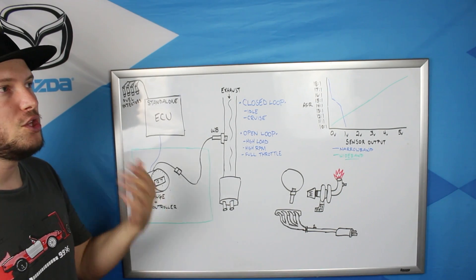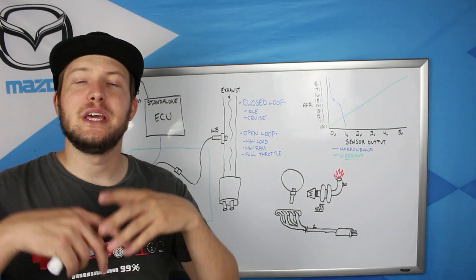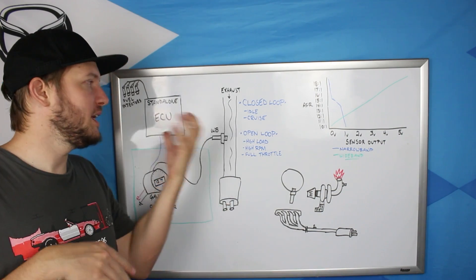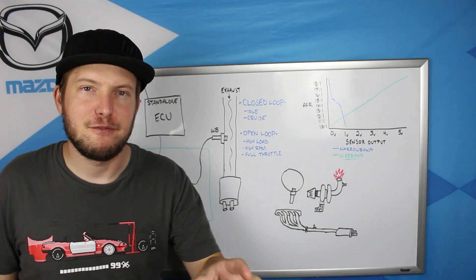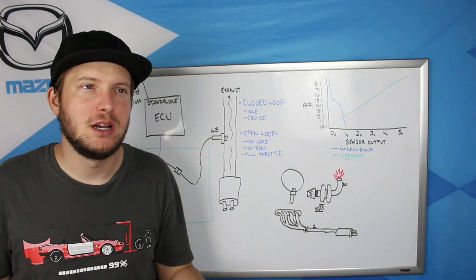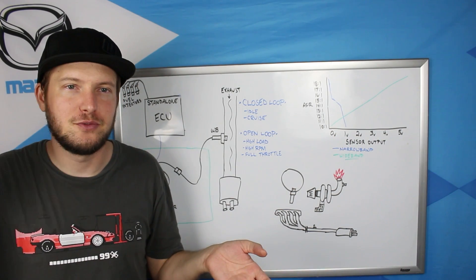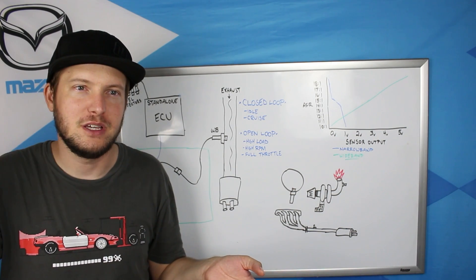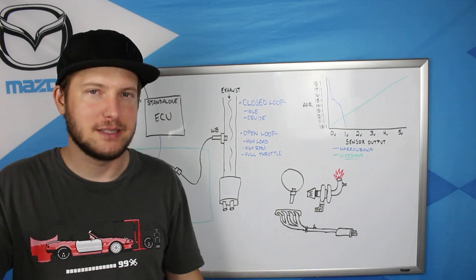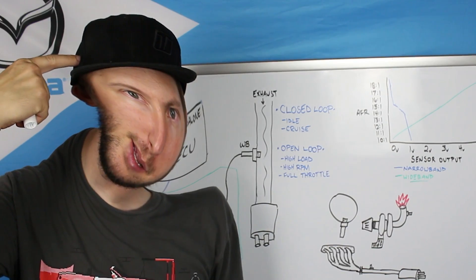You can actually target specific AFRs. So let's say you're cruising on the freeway, and you want to target 15.6 to one. You can put in the tune that you want to target that AFR, where if you had a narrowband sensor, you can't target 15.6 to one. All it can target is 14, 15, 14, 15, 14, 15. That's all it's good for. Widebands, they grind.